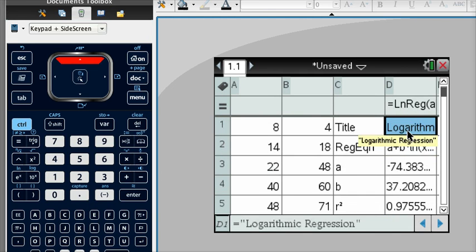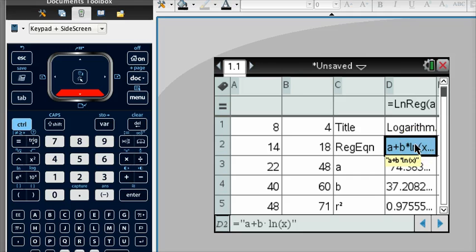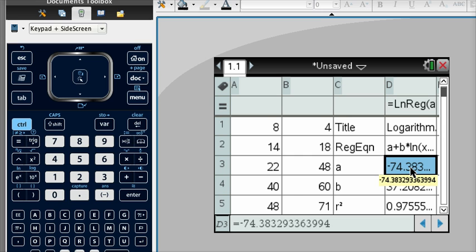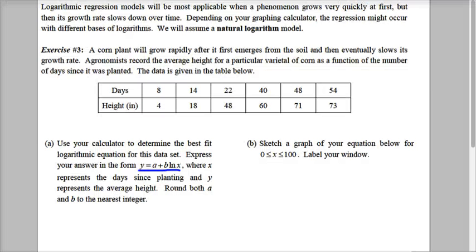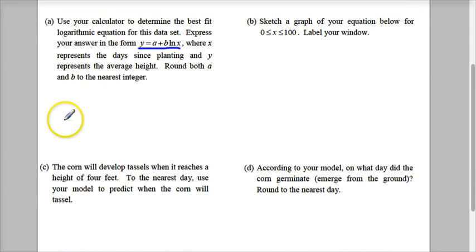The first thing you want to check, is this the form that they asked me for? Of course. It says A plus B, ln of X, and I've got to round these to the nearest whole number. So negative 74.3, that's actually negative 74. And then my B will be rounded to 37. So my actual equation that I have is actually y equals negative 74 plus 37 ln of X.